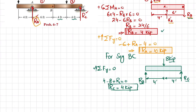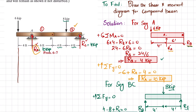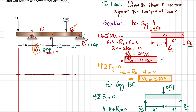Now we have both reactions: RA = 10 kips and RC = 4 kips. We can move on to draw the shear force and bending moment diagram. I will draw vertical lines from the ends of the beam and a horizontal line to show the length in feet.